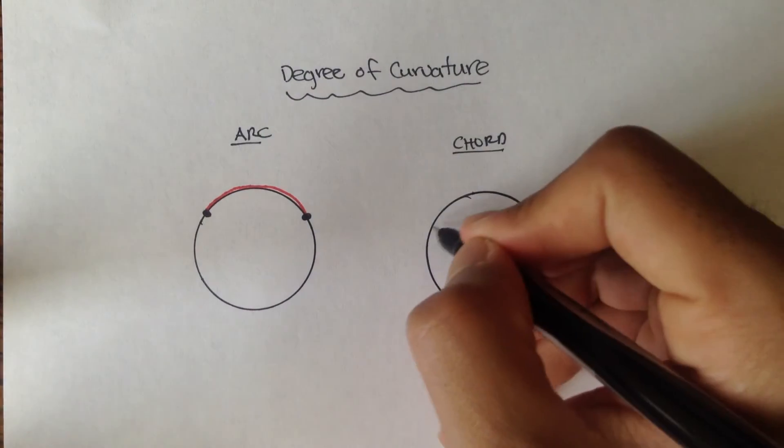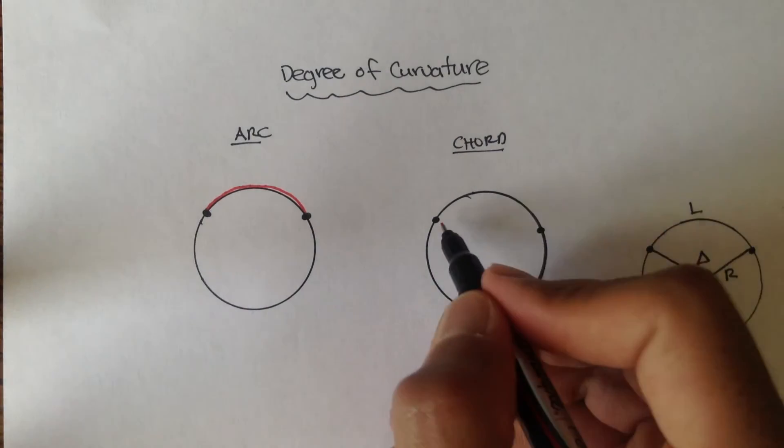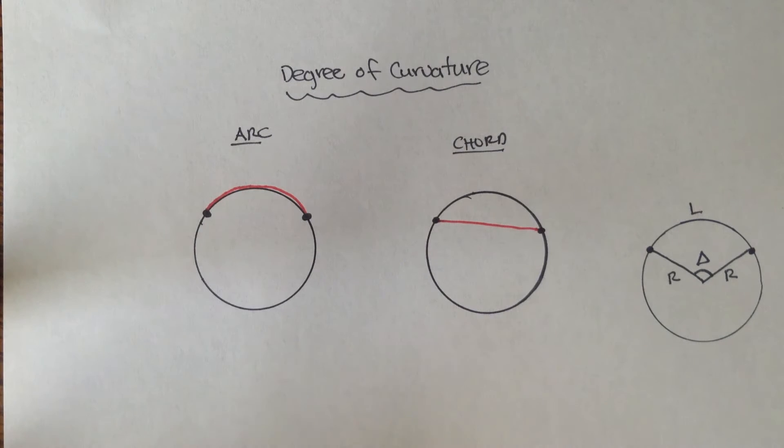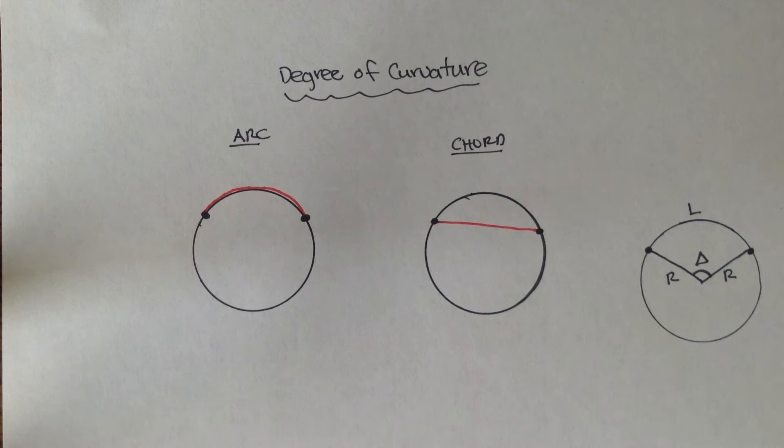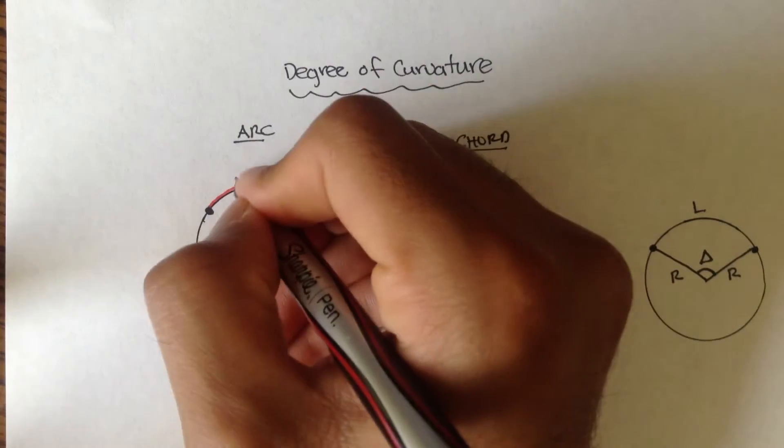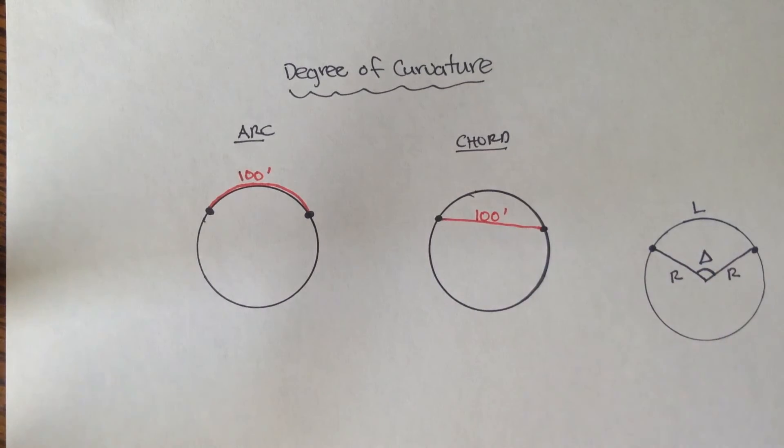For chord, however, remember, chord is the distance from one end of the circle, one point on the circle to the other point on the circle, and it's that. And degree of curvatures are only used for lengths of 100. So, 100. This red is 100, this red is 100.